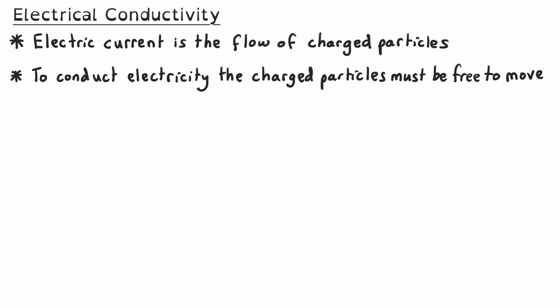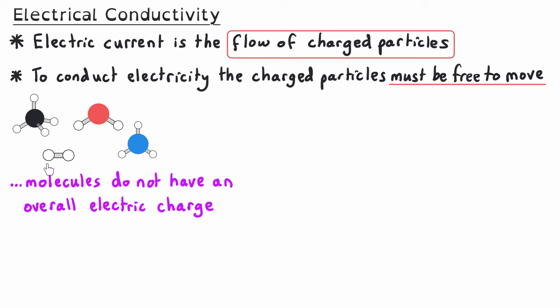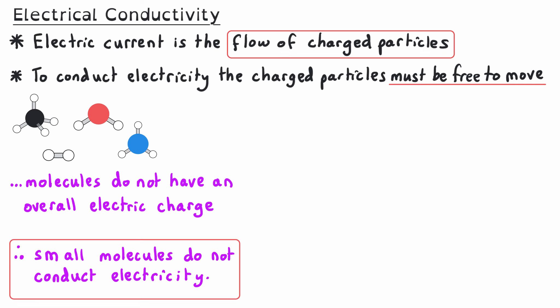Electric current is the flow of charged particles. To conduct electricity, the charged particles must be free to move. So for a material to be a conductor of electricity, it needs to contain charged particles in its structure, and those charged particles must be free to move. Substances that are made from molecules do not have an overall electric charge, as they contain covalent bonds where electron pairs are shared. As a result, small molecules do not conduct electricity.